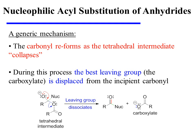In the next step of the mechanism, the carbonyl reforms as the tetrahedral intermediate collapses, and during this process, the best-leaving group — the carboxylate — is displaced from the incipient carbonyl. The result is the nucleophilic acyl substitution product, and a carboxylate has been expelled as a byproduct.